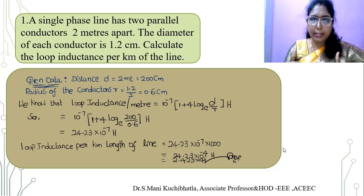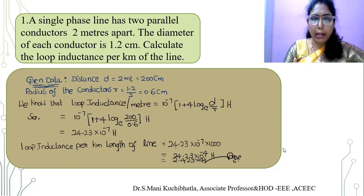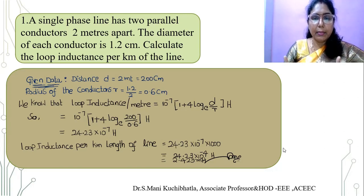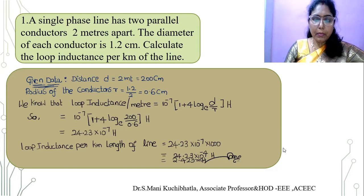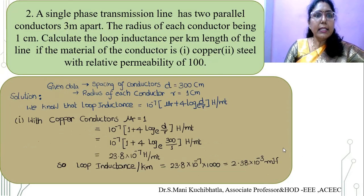The loop inductance per kilometer length of the line is required. What we calculated is per meter, so we multiply the value by 1000. By simplification we get 2.423 millihenries. Generally the inductance is mentioned in millihenries. Next we will solve one more problem on the same concept.